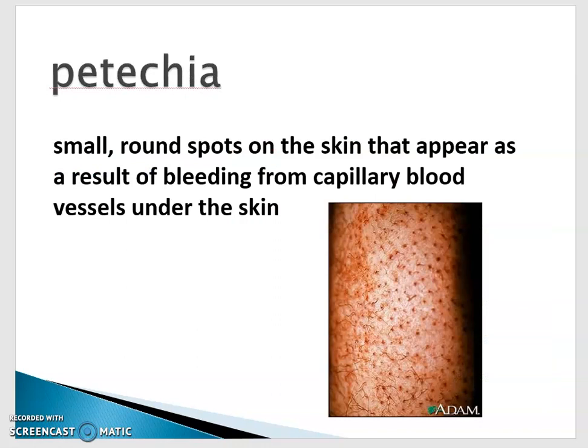Petechia are small round spots in the skin that appear as a result of bleeding from capillary vessels under the skin. This is not a form of acne — it's a side effect of certain types of infections or skin infections. Petechia can result from a number of conditions. They usually indicate something is going on. If petechia shows up unexpectedly and the patient isn't already being treated, it's a good idea to seek medical care, because there's likely something that needs to be addressed.